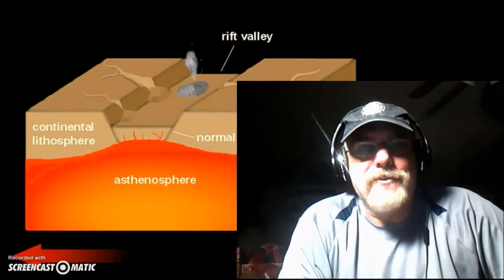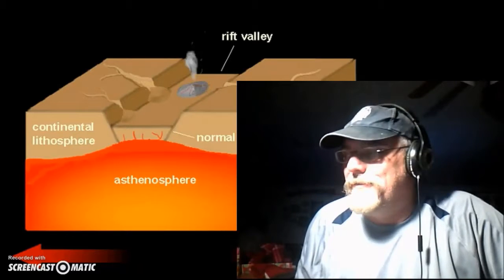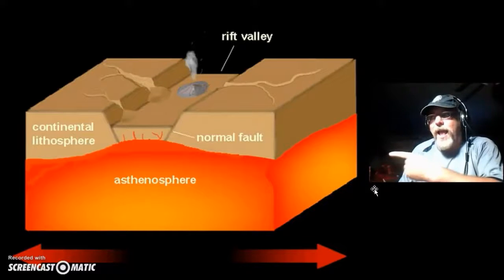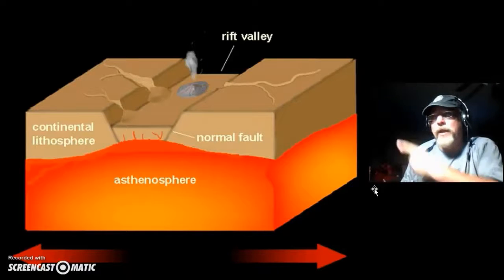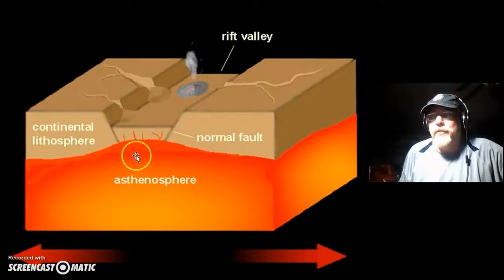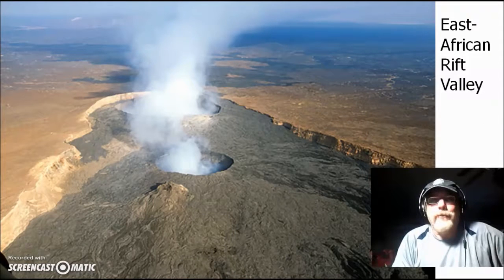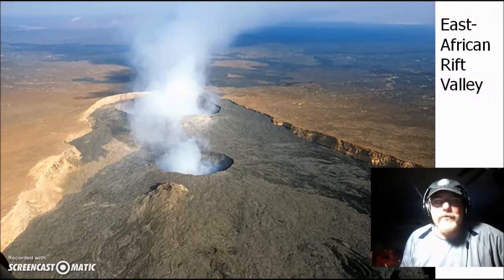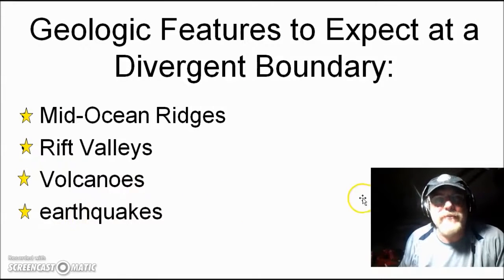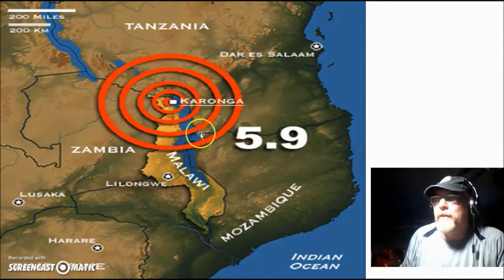At divergent boundaries you should expect to see mid-ocean ridges, rift valleys, and volcanoes. Here you see a rift valley, and in rift valleys you should definitely expect to find volcanoes, as the liquid magma pushes up near the surface. Back at the East African Rift Valley — sure enough, volcanoes. And if volcanoes aren't enough excitement, you should also expect to find earthquakes at divergent boundaries. The East African Rift Valley is the place to be for action if you like volcanoes and earthquakes.